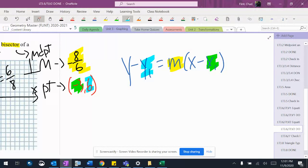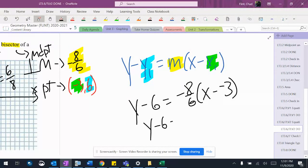So y minus six equals negative eight over six times x minus negative three. Y minus six, negative eight over six, x plus three.